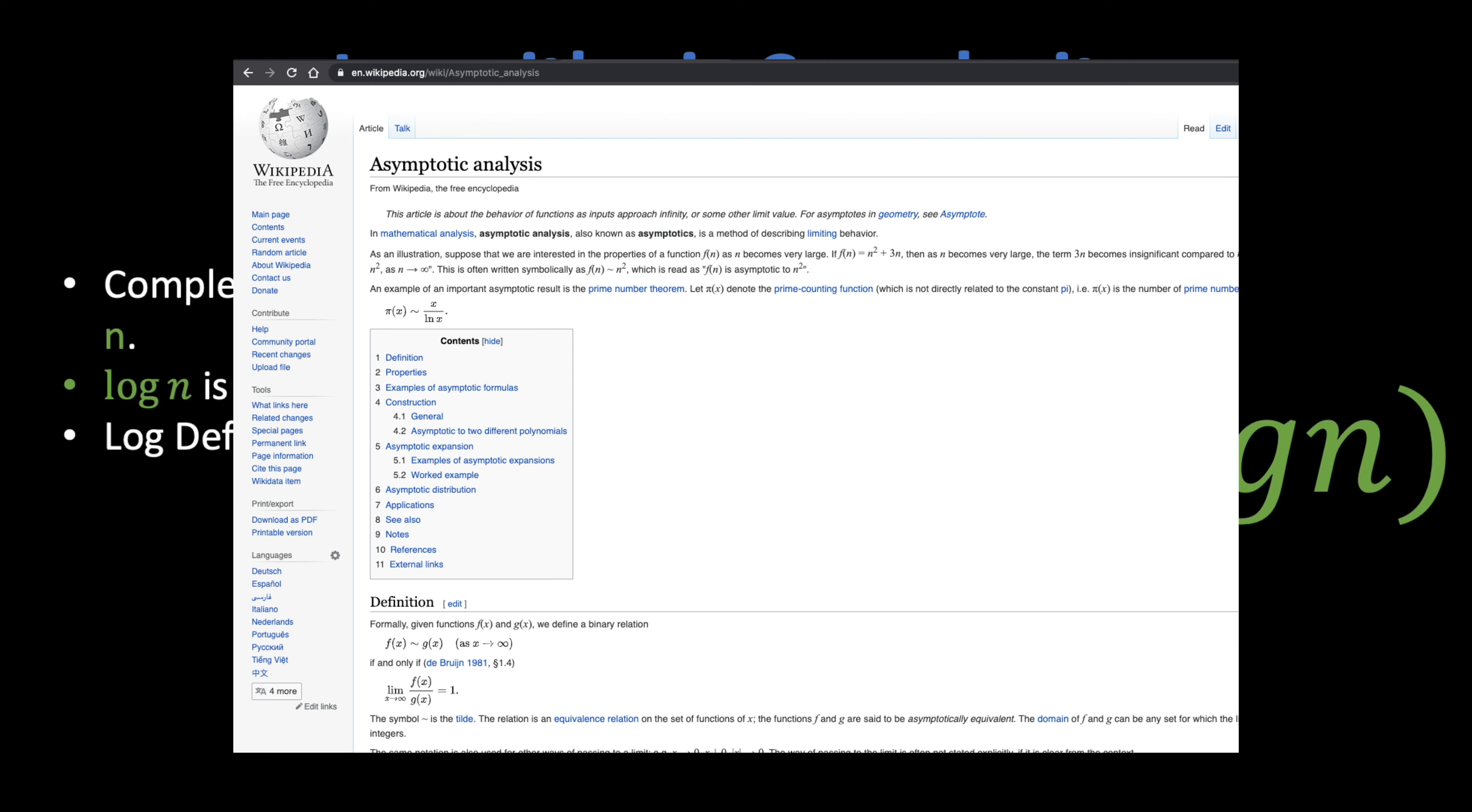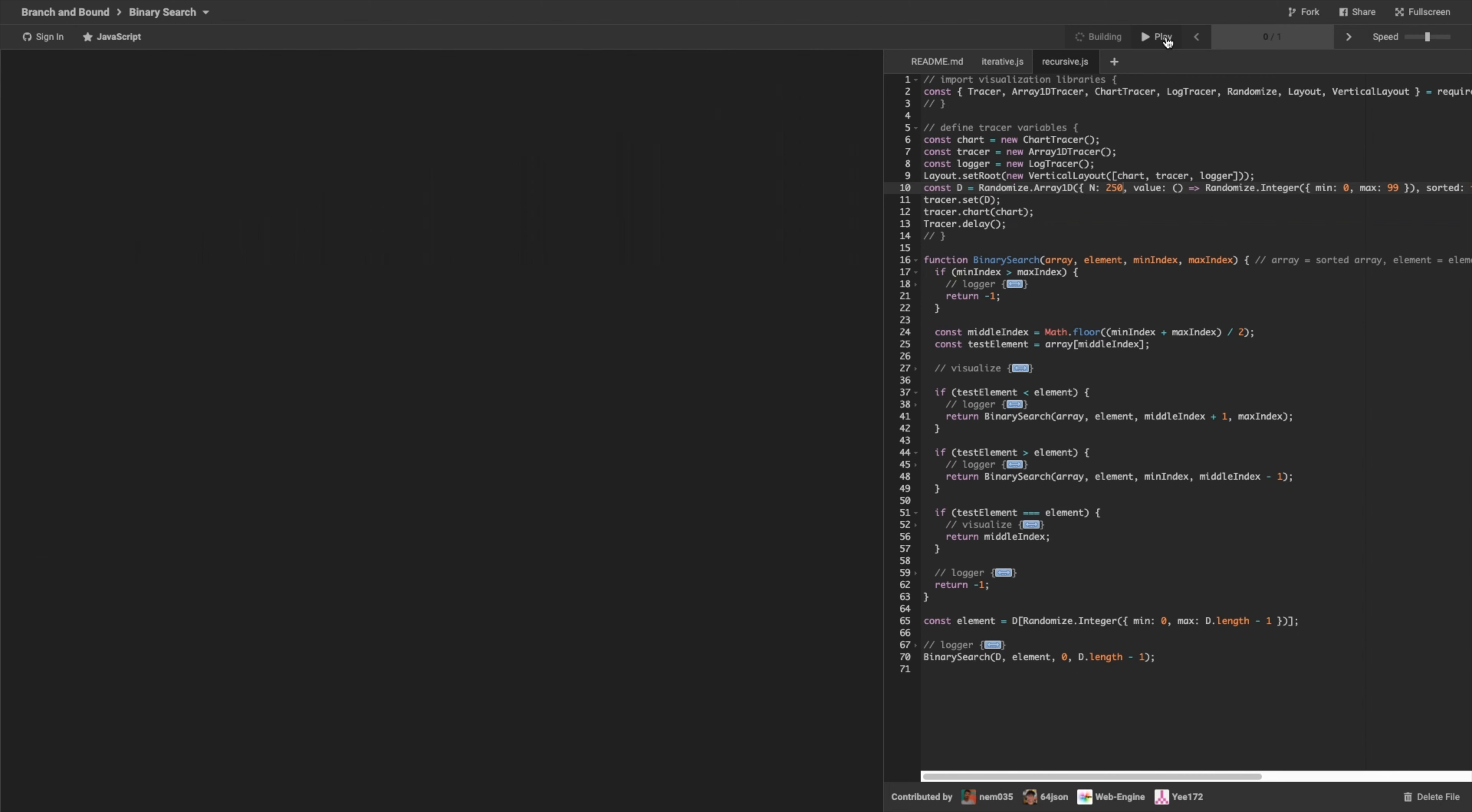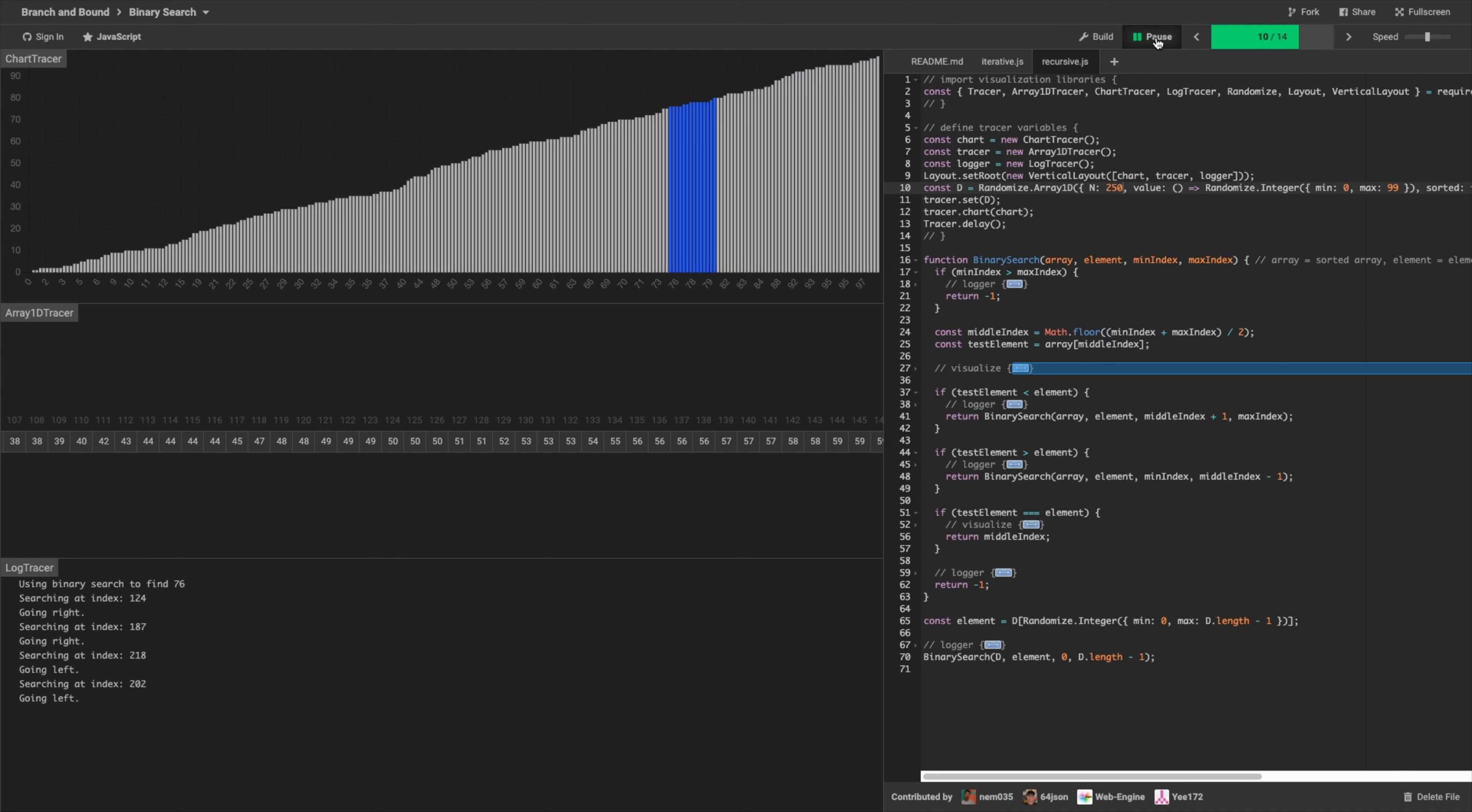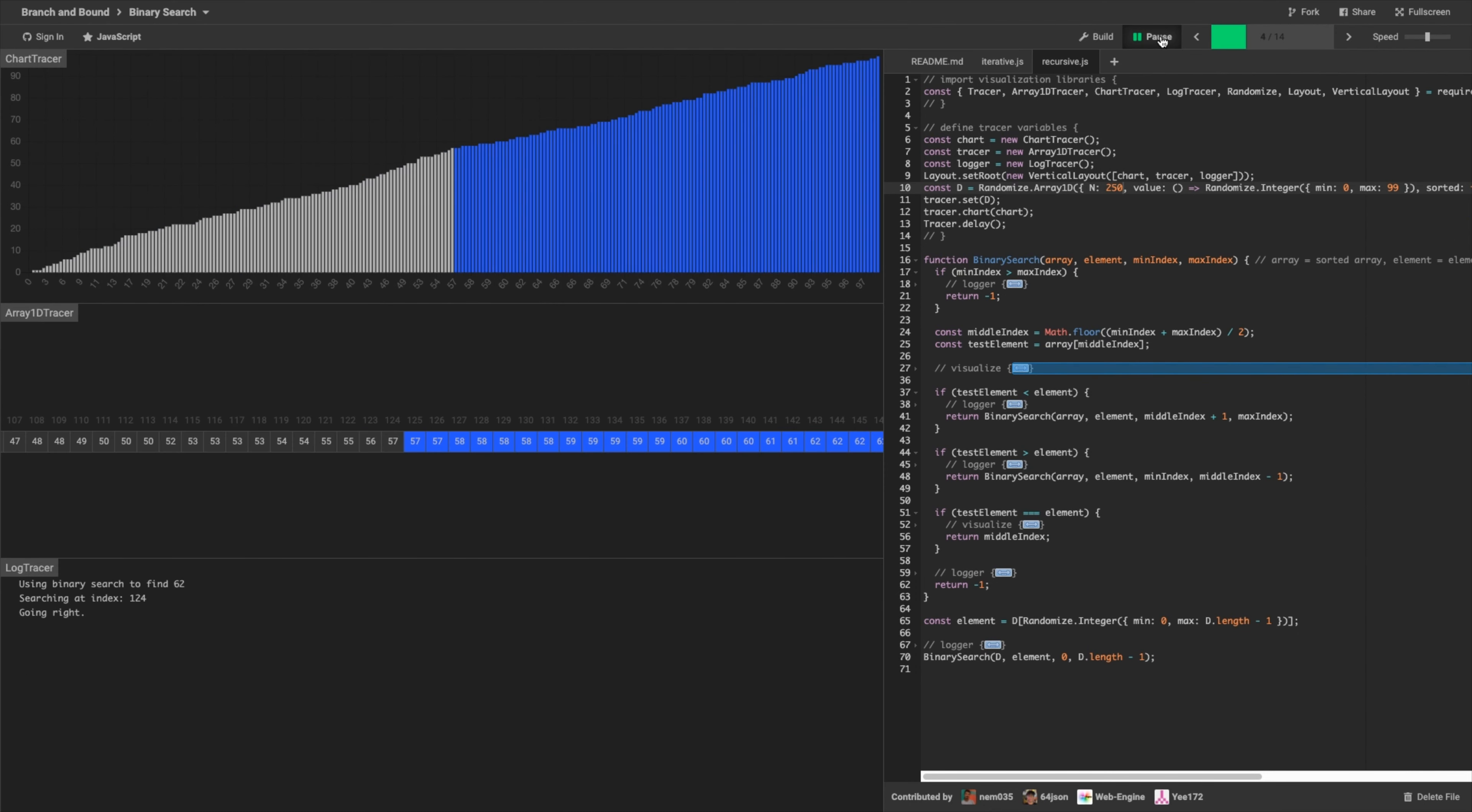Binary search is a classic example of logarithmic time complexity. Imagine you have a sorted array of integers. When you are searching for a specific value, all you need to do is to get the middle element of the array and compare it to the value that you are looking for. If the middle element is less than the value that you are looking for, you can safely discard the first half of the array and repeat the same process on the second half until you find your value.